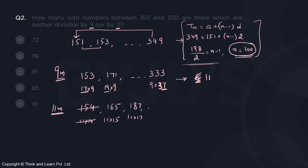Next would be 11 into 17, that is 187, and that way the series would go on. So what is the last number before 349 which is divisible by 11? It is 341 which is 11 into 31. So how many such numbers are there? 15, 17 up to 31.